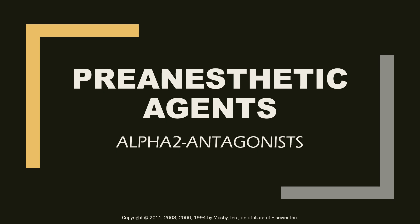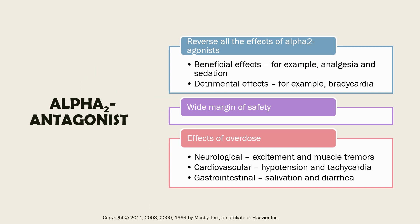Welcome to our lecture on pre-anesthetic agents. We are now on the reversal agents of the alpha-2 agonists, which are the alpha-2 antagonists. Alpha-2 agonists are pre-anesthetic agents with specific reversal agents. An important consideration when using an alpha-2 antagonist in patients under anesthesia is that it will reverse all effects of the alpha-2 agonists — both the detrimental effects as well as the beneficial effects.